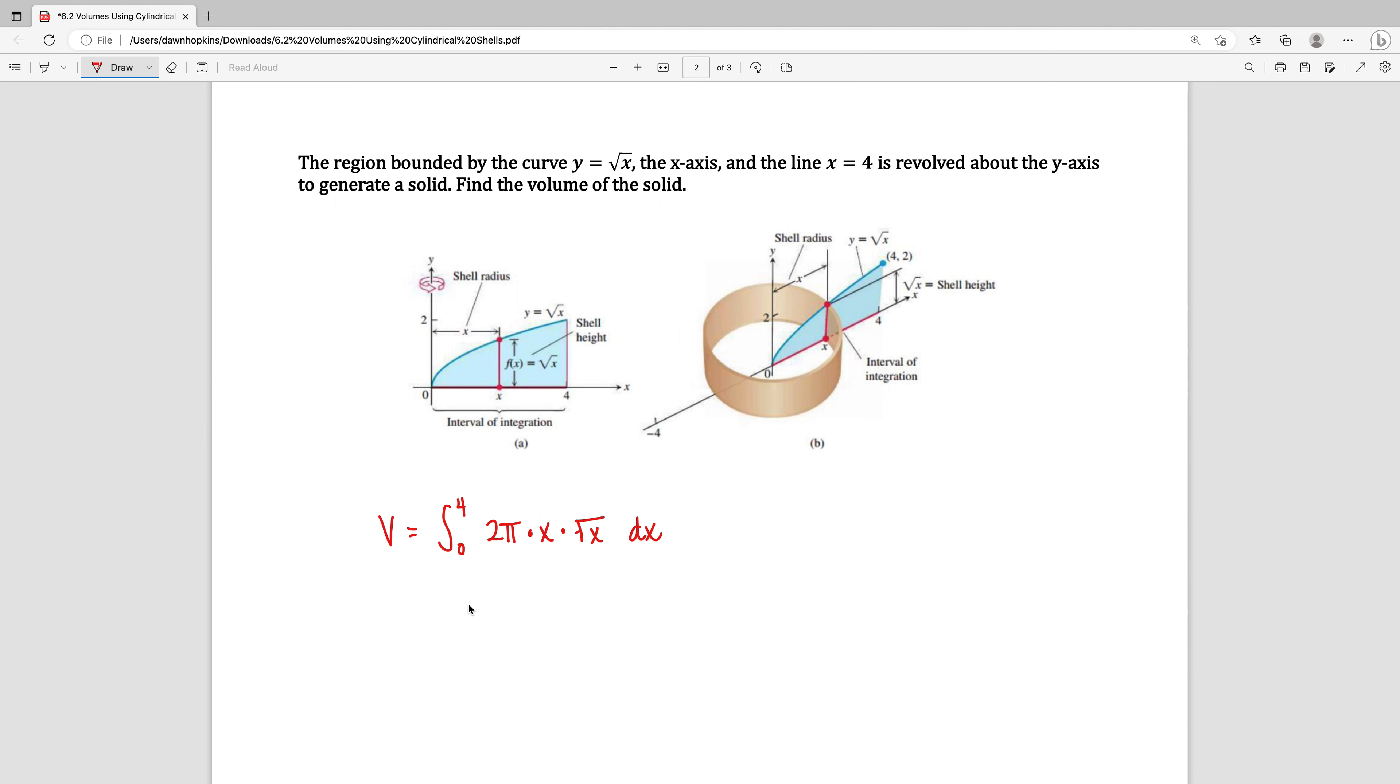So we can go ahead and integrate this. I'm going to bring the 2 pi in front. X times the square root of X is X to the 3 halves power. When we integrate, we're going to get X to the 5 halves power divided by 5 halves or 2 fifths X to the 5 halves power, looking at that from 0 to 4.